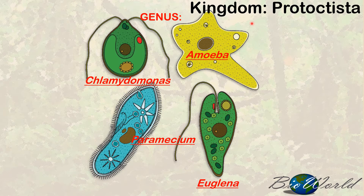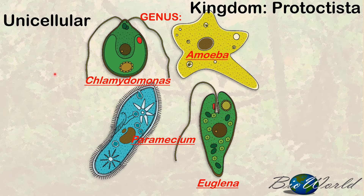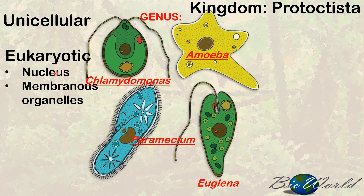Now let's have a look at the characteristics of kingdom protoctista. Firstly, members of this kingdom must be unicellular — they have to be single-cell organisms. Secondly, they must be eukaryotic, which means they will have a nucleus as well as membranous organelles. Let's discuss a few of the membranous organelles.